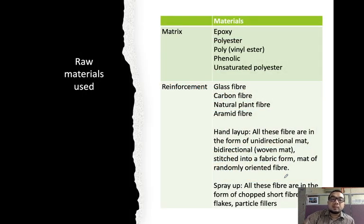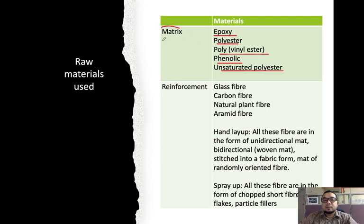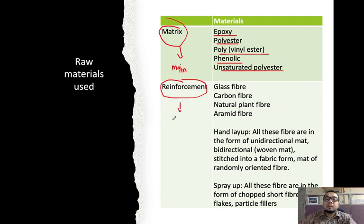The common raw materials used for hand layup or spray-up are the matrix — epoxy, polyester, polyvinylester, phenolic, and unsaturated polyester — normally thermoset materials. The matrix is the main polymer, while reinforcement is the additive (penguat) that strengthens the composite. Reinforcement materials include glass fiber, carbon fiber, natural plant fiber, and aramid fiber.